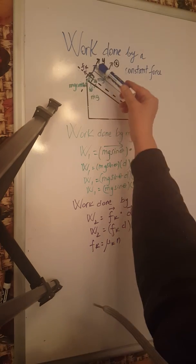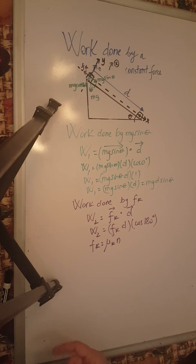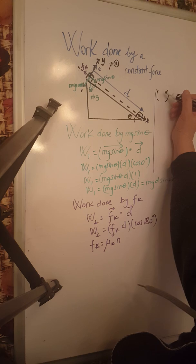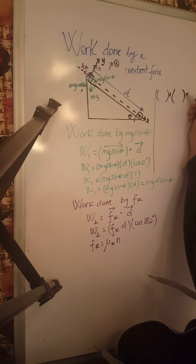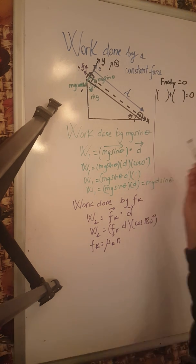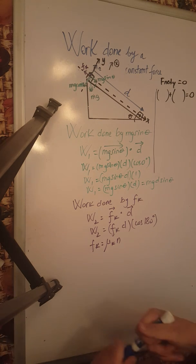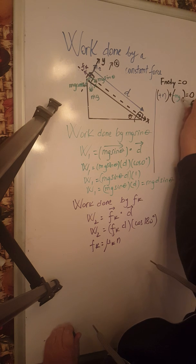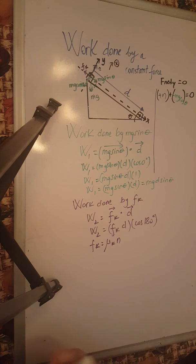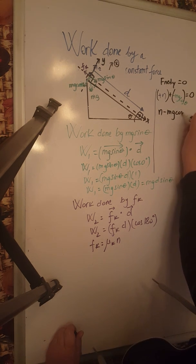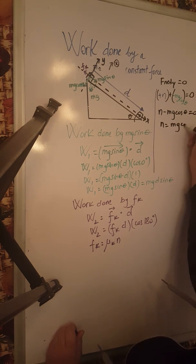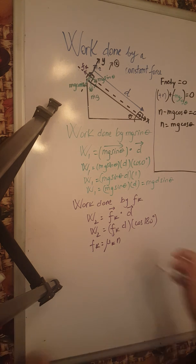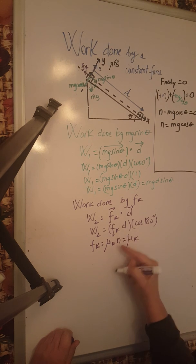The normal force is determined from the balance of forces along the y-axis, with positive chosen upward. Writing the force balance: one force goes upward and another downward, so the net force in y equals zero. Positive n minus mg cosine theta equals zero, giving n equals mg cosine theta. Substituting this in, the magnitude of the force of friction becomes mu k times mg cosine theta.